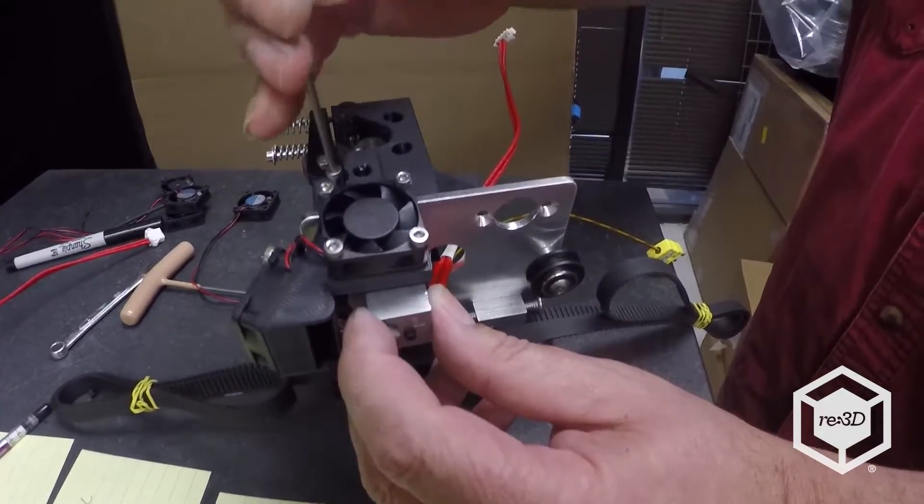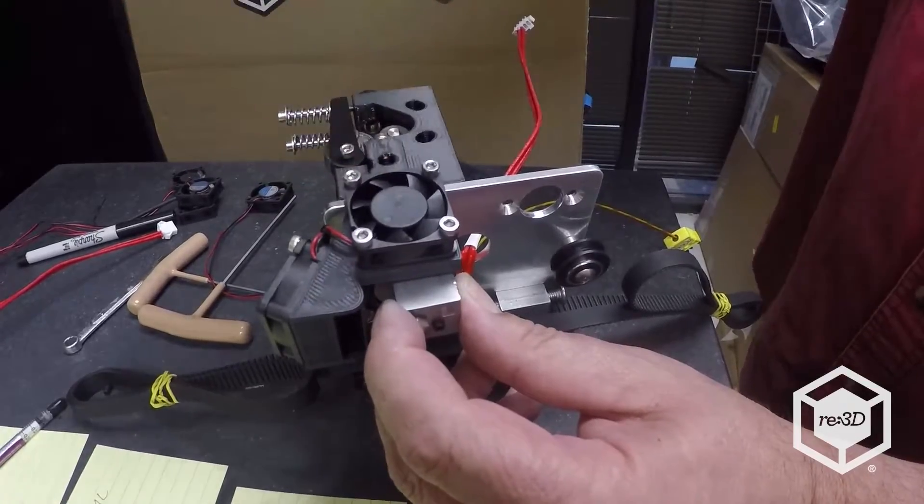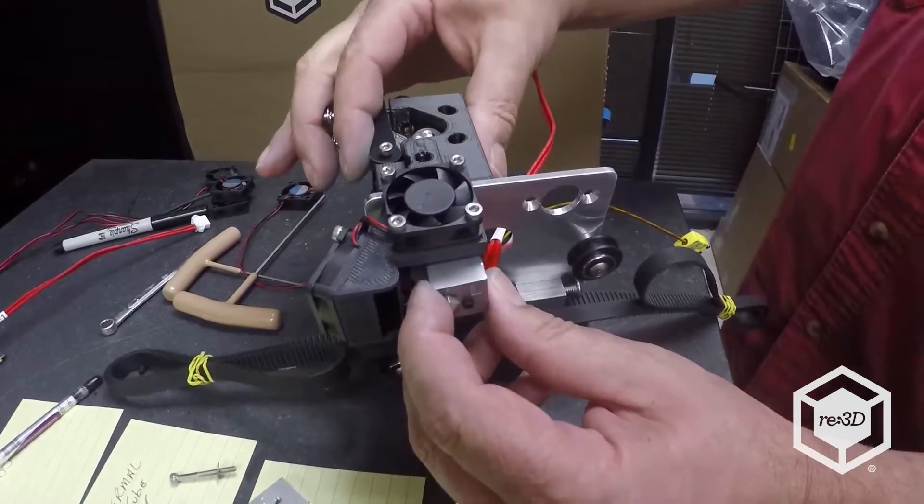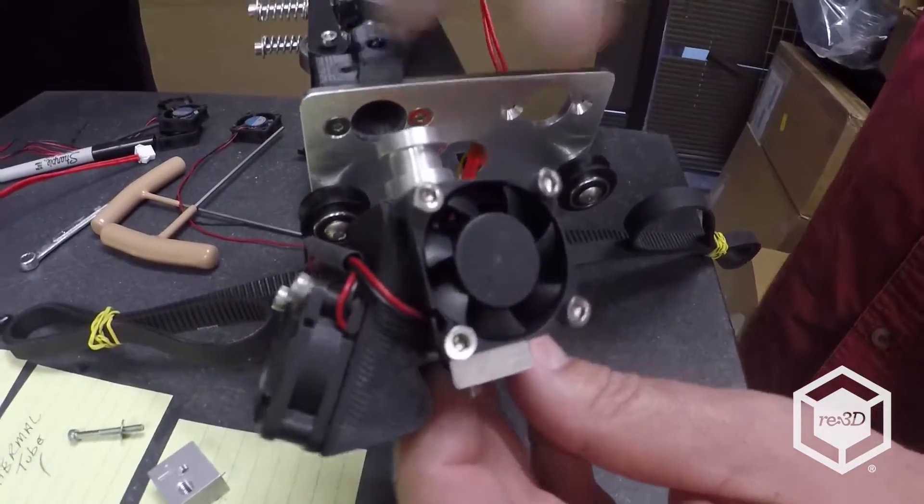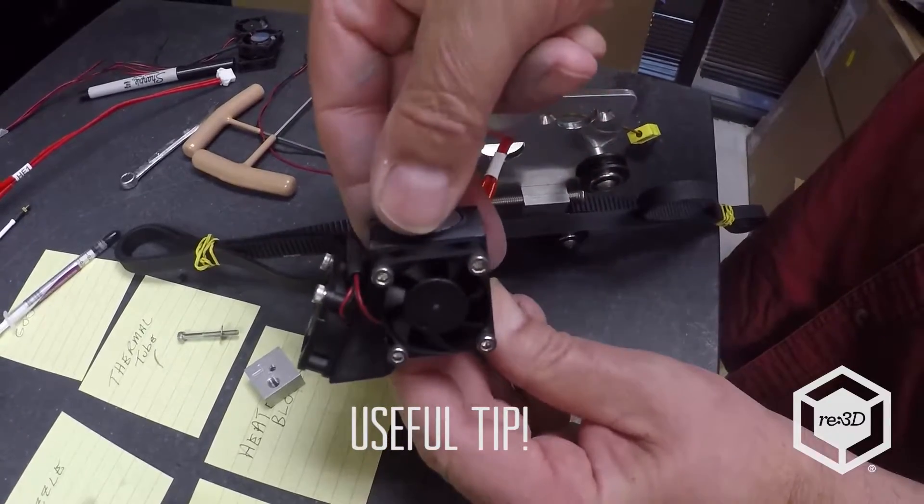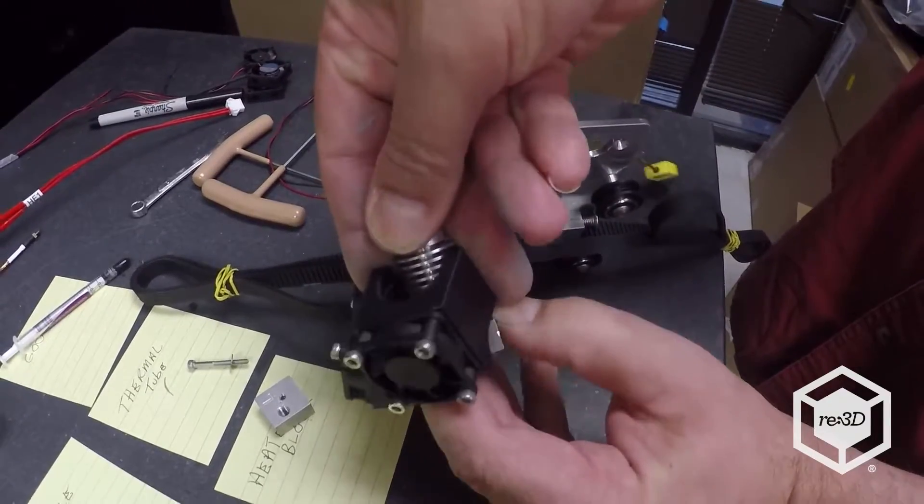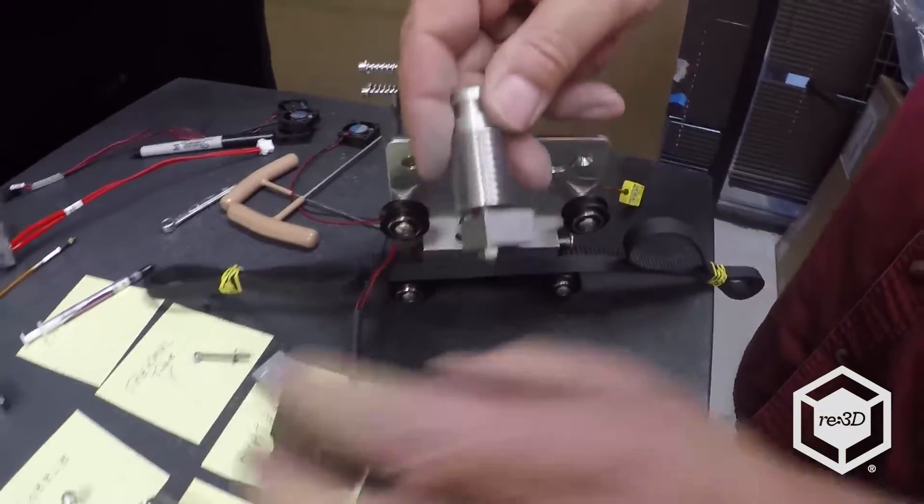Because it actually holds the hot end in place. Didn't get it far enough. So you remove the screw. Now the hot end will just slide right out. Now you can see it's still got everything on it. The fans just pop off as a unit. So if you just press on the plastic part it's just popping right off.